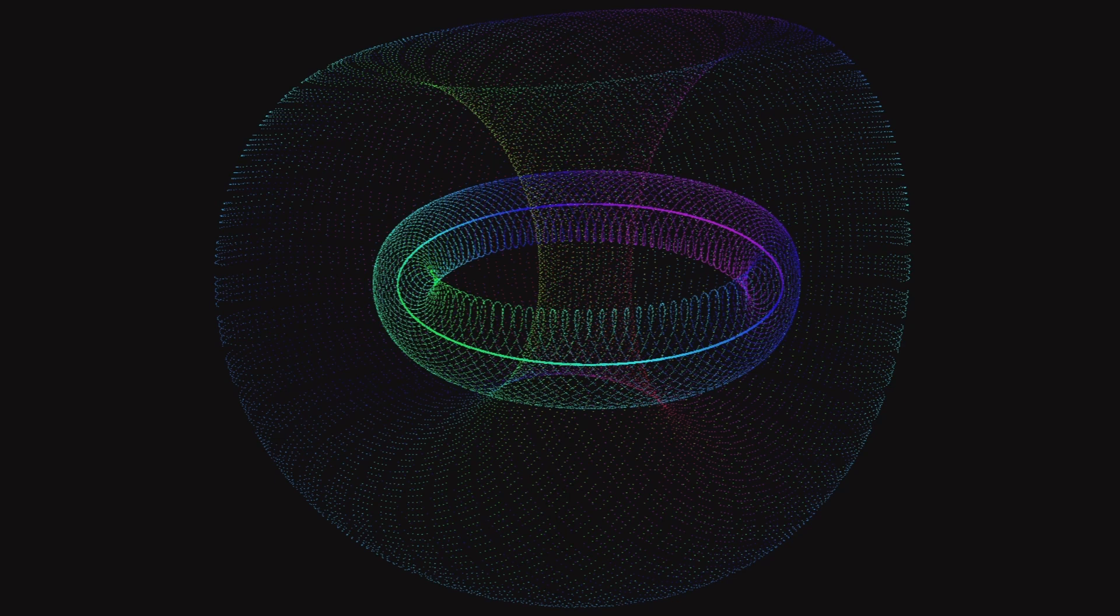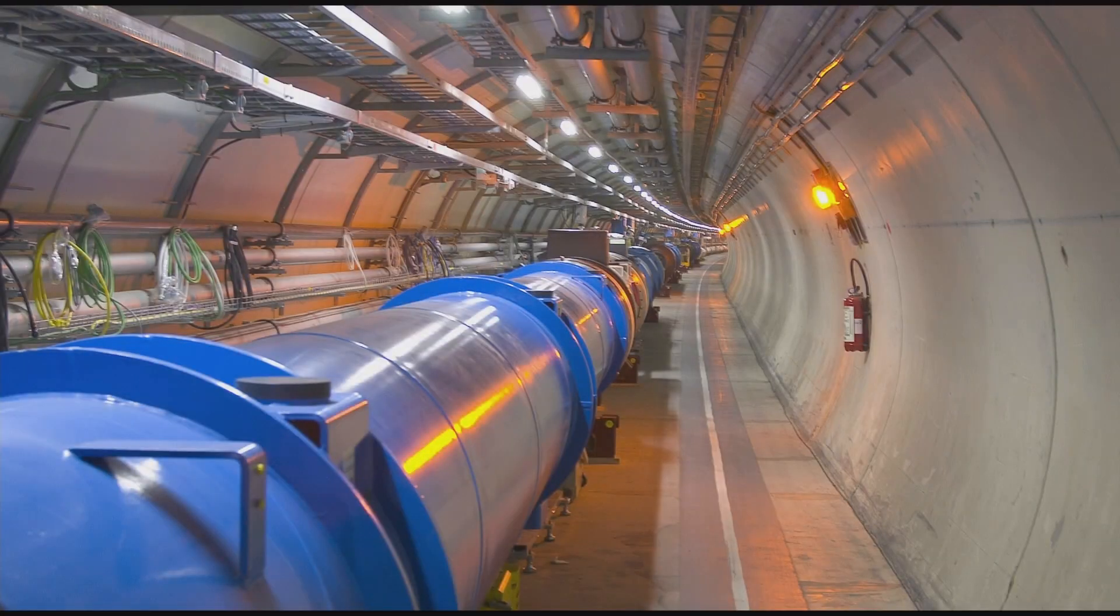But it was the Large Hadron Collider, LHC, which was built in the 2000s, that would truly put CERN on the map. The LHC was the largest and most powerful particle accelerator in the world and it allowed scientists to study the properties of subatomic particles at energies never before reached.